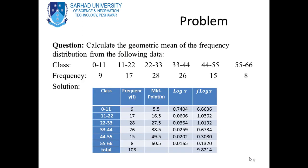Question: Calculate the geometric mean of the frequency distribution from the following data. Classes: 0–11 (frequency 9), 11–22 (frequency 17), 22–33 (frequency 28), 33–44 (frequency 26), 44–55 (frequency 15), 55–66 (frequency 8). The class intervals and frequencies are given.